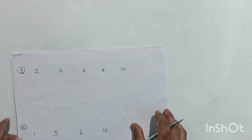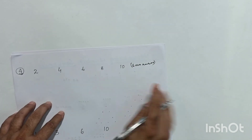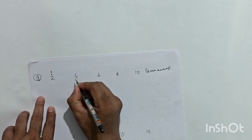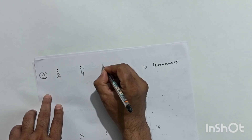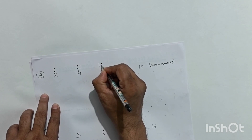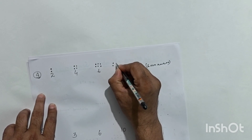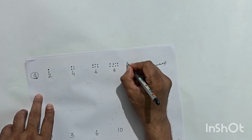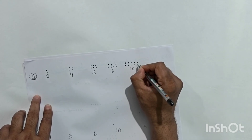The next sequence is even numbers: 2, 4, 6, 8, 10. We put two dots in the first position, four dots in the second, six dots in the third, eight dots in the fourth, and ten dots in the fifth position.